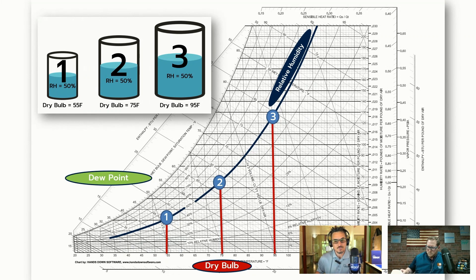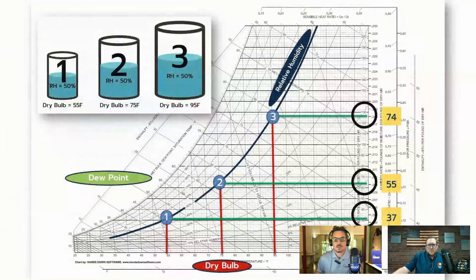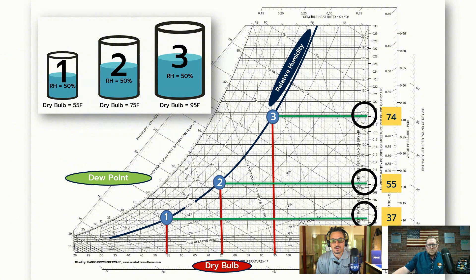Dewpoint is a great way to track the actual amount of humidity in the air — it's not relative to the temperature. You can see the dewpoint here, here, and here. The dewpoint of container one is 37, and the dewpoint of container three is 74. This illustrates that dewpoint is a much better number to show the actual amount of moisture in the air.